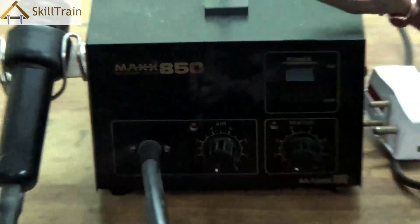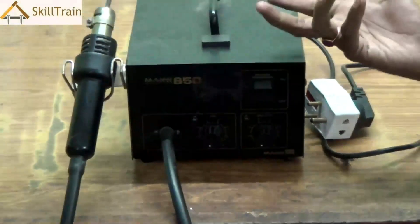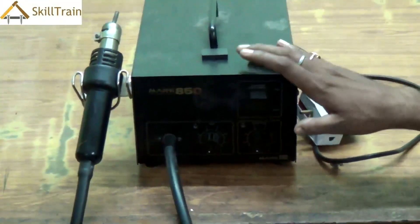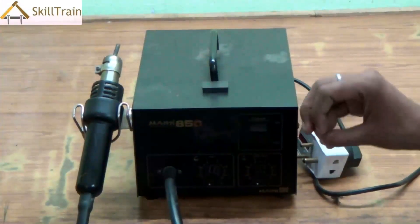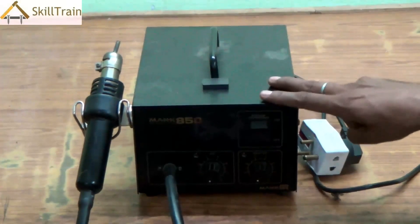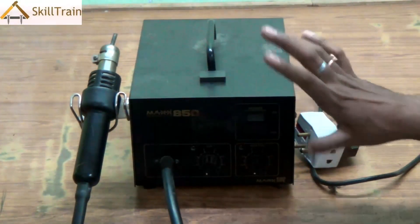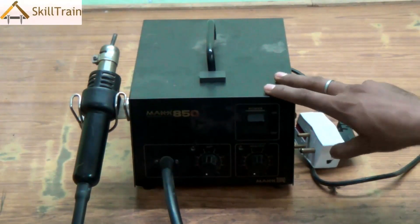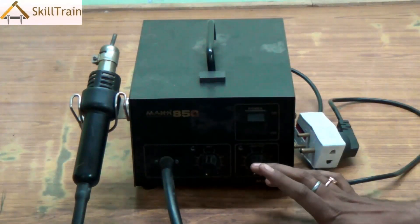It's also called a hot air gun because you could see a small gun-like part on the side which actually blows out hot air and that is necessary for us while we are placing or removing components from a PCB. Now let's try and understand what are the several components in the SMD. What is it that we need to do while we are working on the SMD?